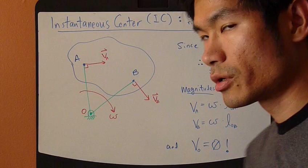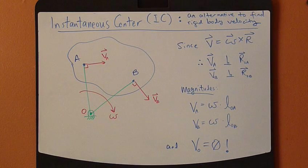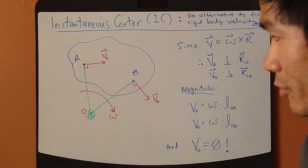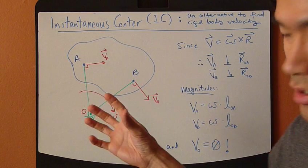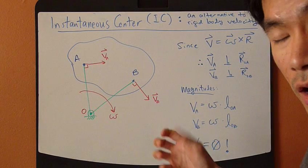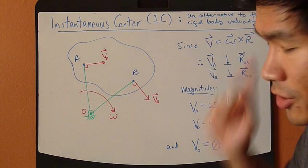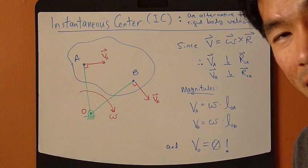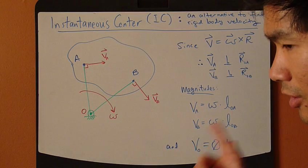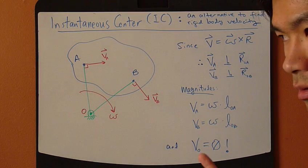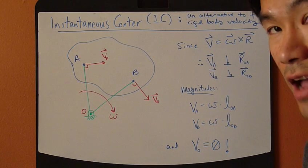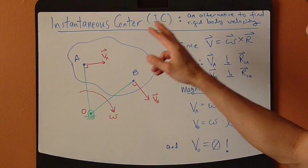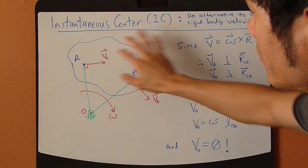So far I've introduced the analysis method to solve for rigid body velocity, which is rigid body motion equals translation plus rotation. Now I'm going to introduce an alternative to solve for rigid body velocity. This method could actually be more powerful, fast, and convenient. It's called the instantaneous center method.